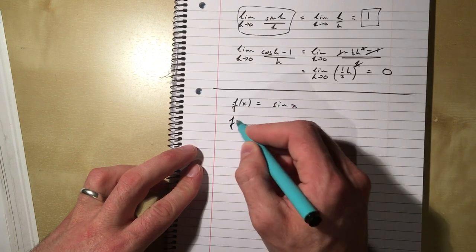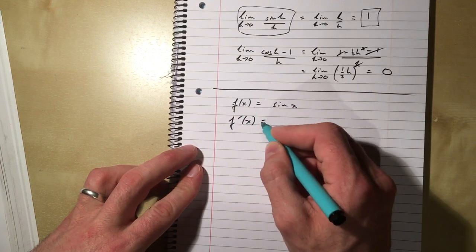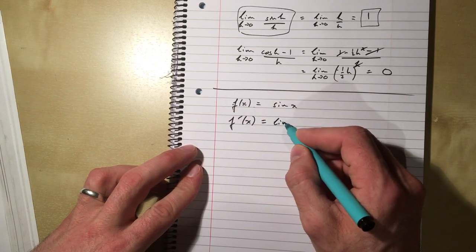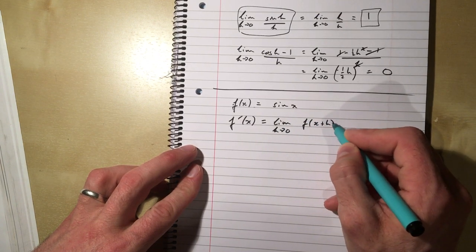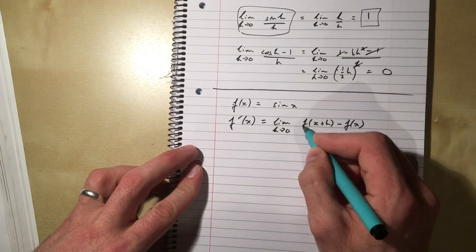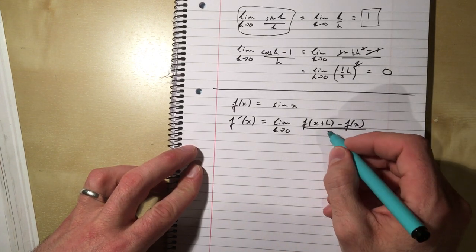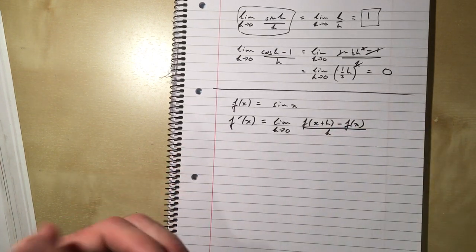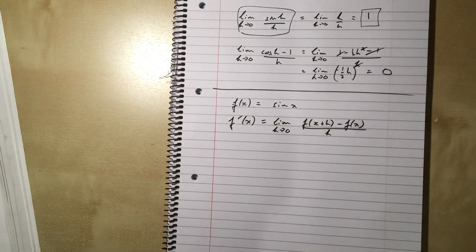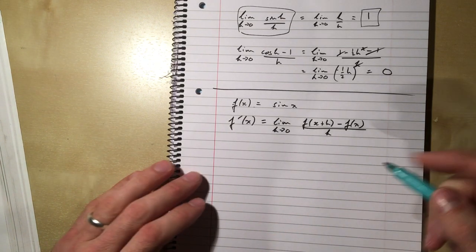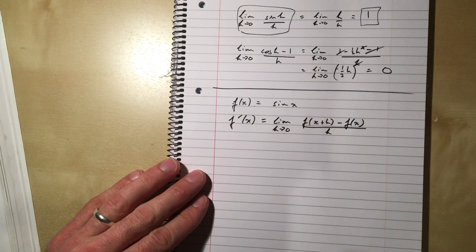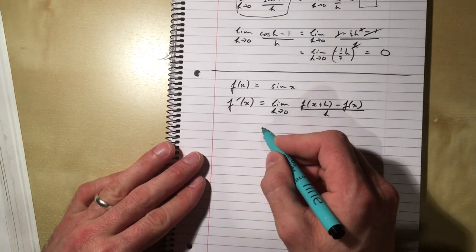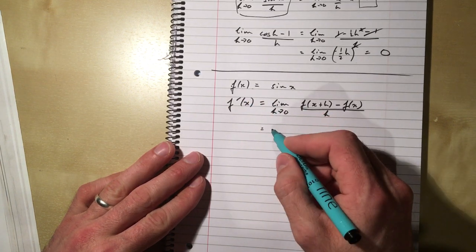then the limit definition of a derivative is this: The derivative is the limit as h tends to 0 of f of x plus h minus f of x divided by h. And if you don't remember that, then go back into the first year book and remind yourself of the first bit of the differentiation chapter of the first year book.